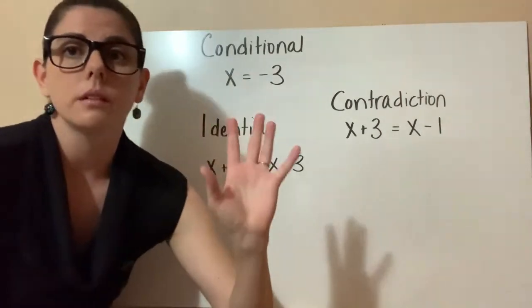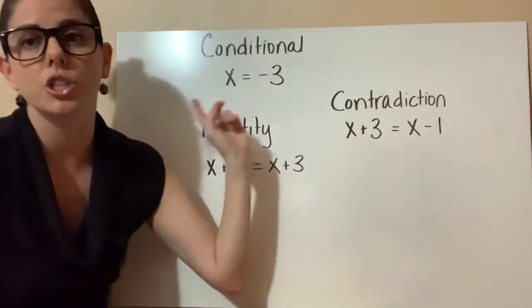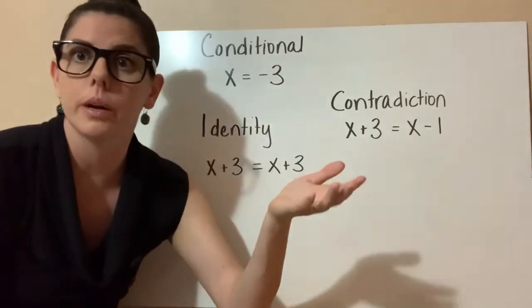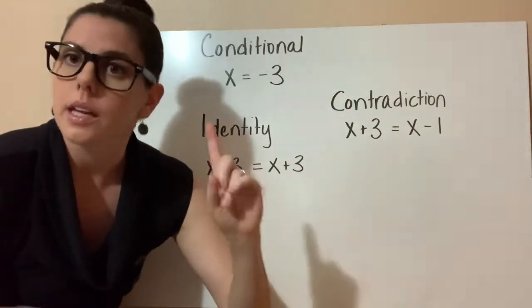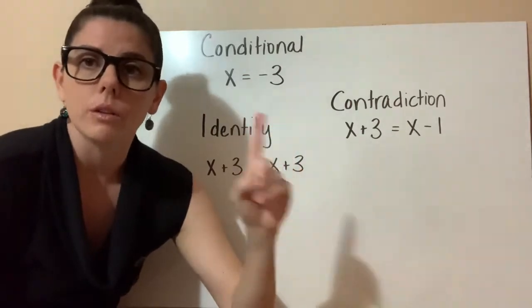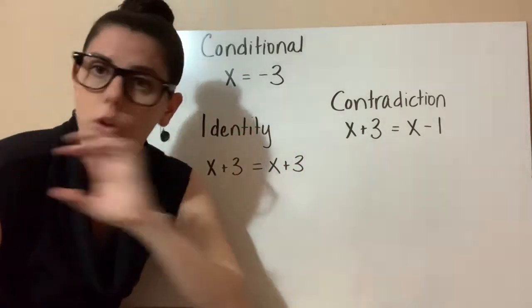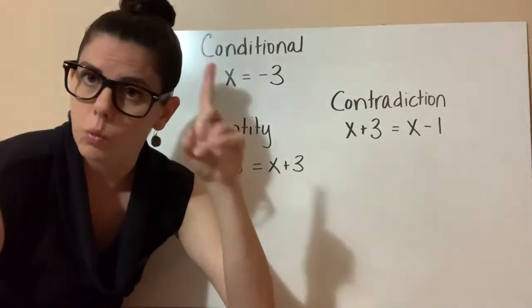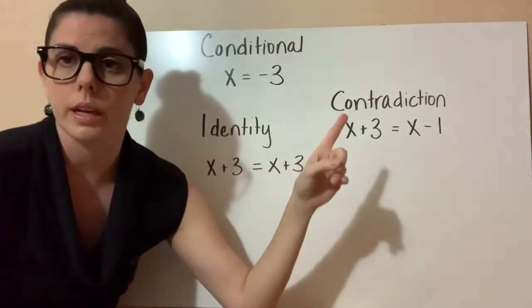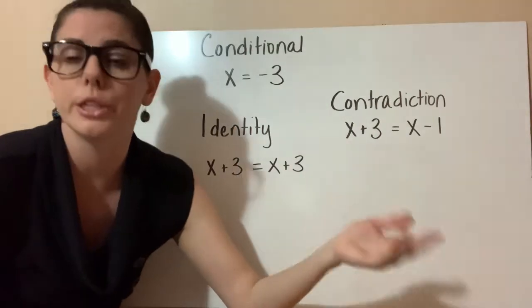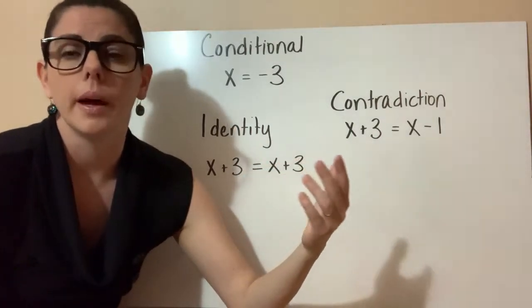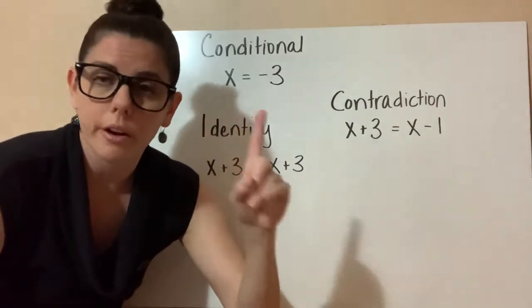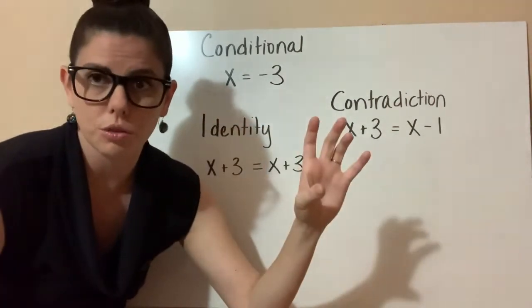So sometimes, up until now we've been working with what we call a conditional equation, where when you solve it, your variable is going to equal one thing, meaning there's only one condition where that equation is going to be true. So x is going to equal negative three, or 1.2, or negative one-fourth. You're solving for what that variable can equal to make that equation true.